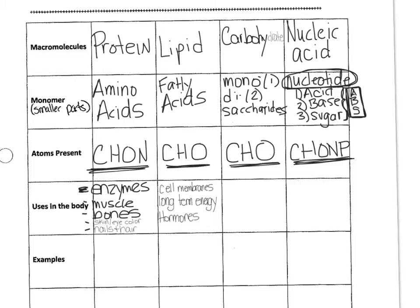A lot of people think lipids are bad for you because they think of fats as unhealthy, but they're actually very important. Your body needs lipids to build cell membranes, for long-term energy storage, and for hormones, which are involved in all kinds of processes. Not having any fats in your diet is actually very bad, because if you can't make new cell membranes, you can't repair your body. It comes down to proper balance — you don't want too many lipids, but don't cut them out completely.